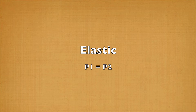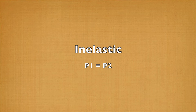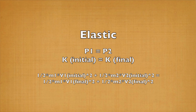First, let's focus on elastic collisions. In both elastic and inelastic collisions, momentum is conserved, but an elastic collision is defined as a collision in which kinetic energy is also conserved. This means that before and after the collision, the total kinetic energy of the objects will be unchanged. Here is the previous equation expanded out with two objects colliding.